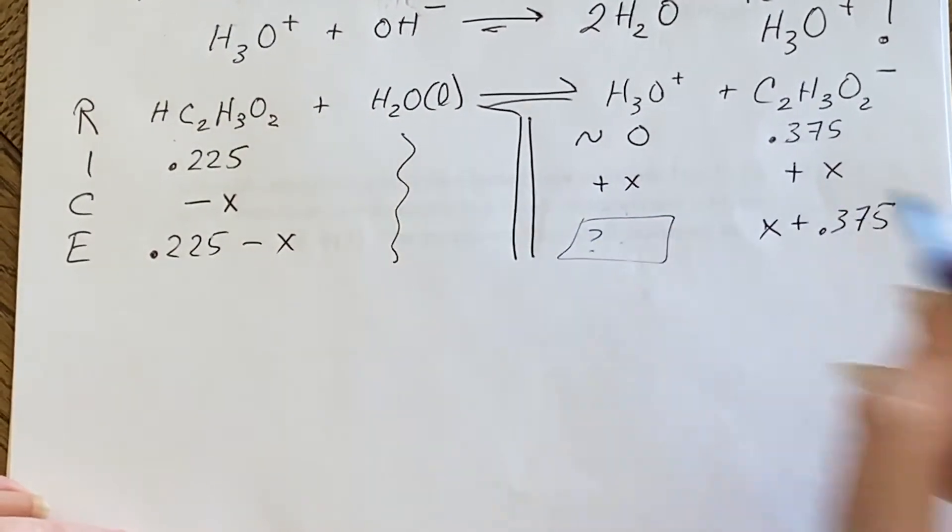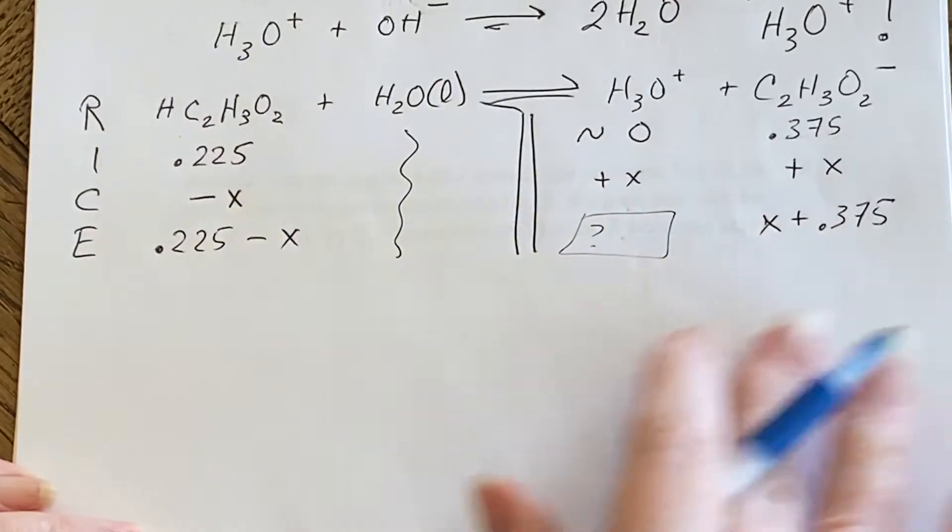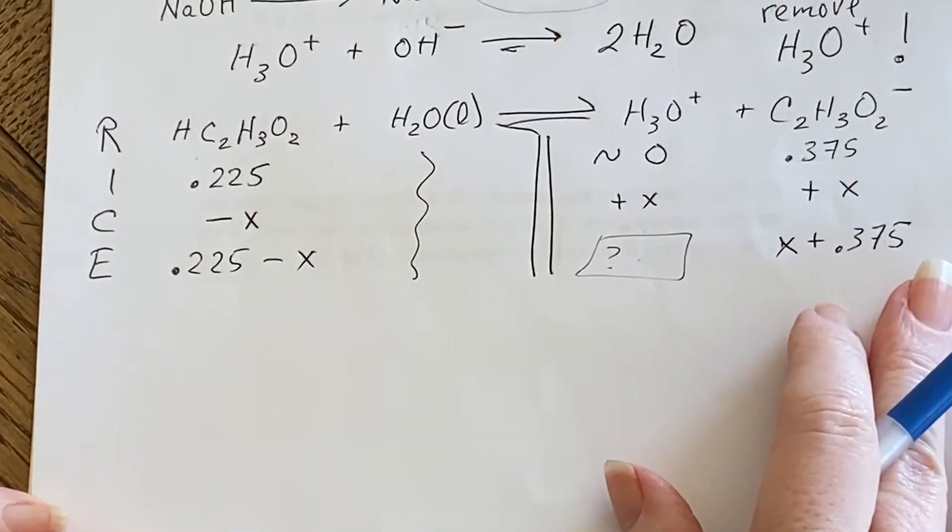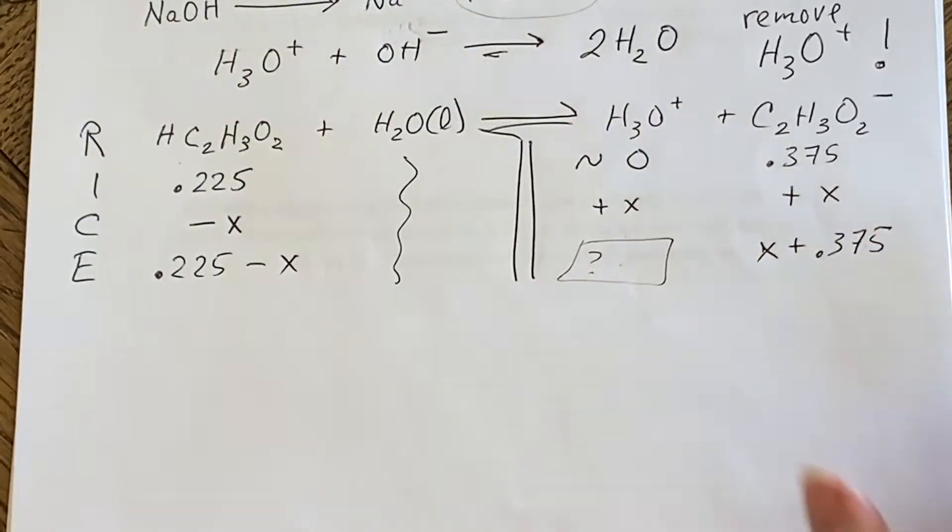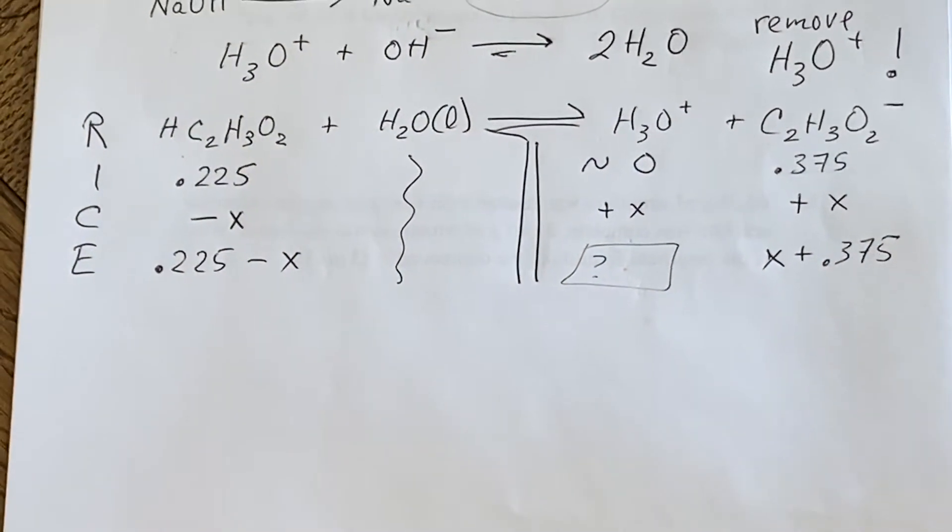And I'm just using this to sort of set this up. I'm not quite sure what I'm putting here right now, but I have an idea of what is happening now. I'm using this RICE table to clarify what I'm going to do with Henderson-Hasselbalch.